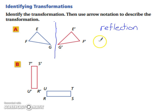And now for arrow notation, we have triangle E, F, G is transforming into triangle E prime, F prime, and G prime.